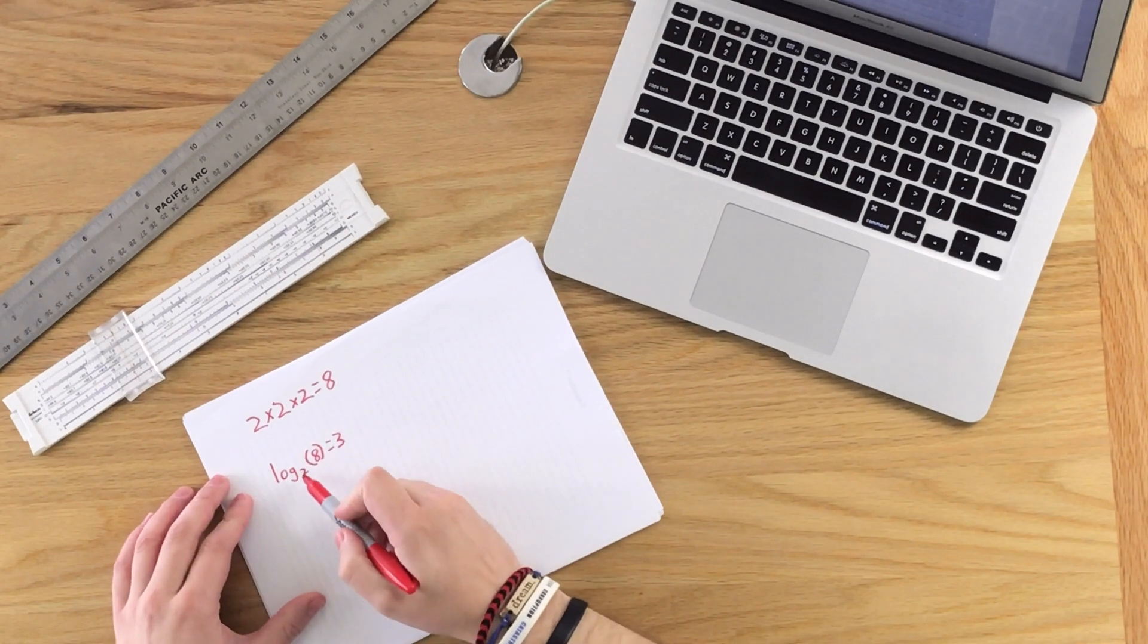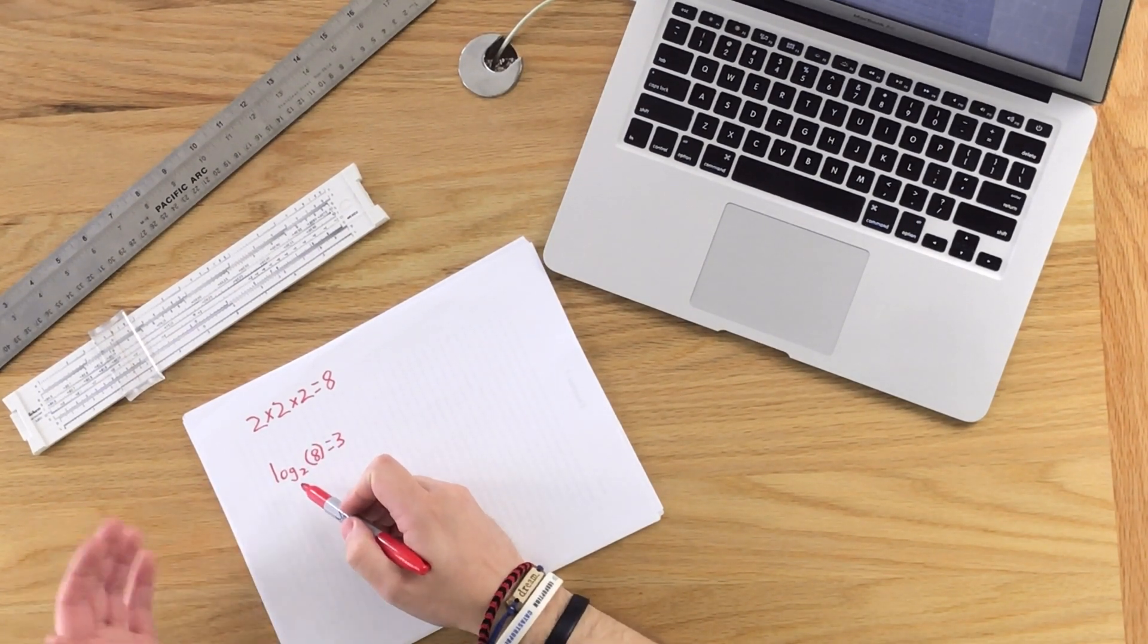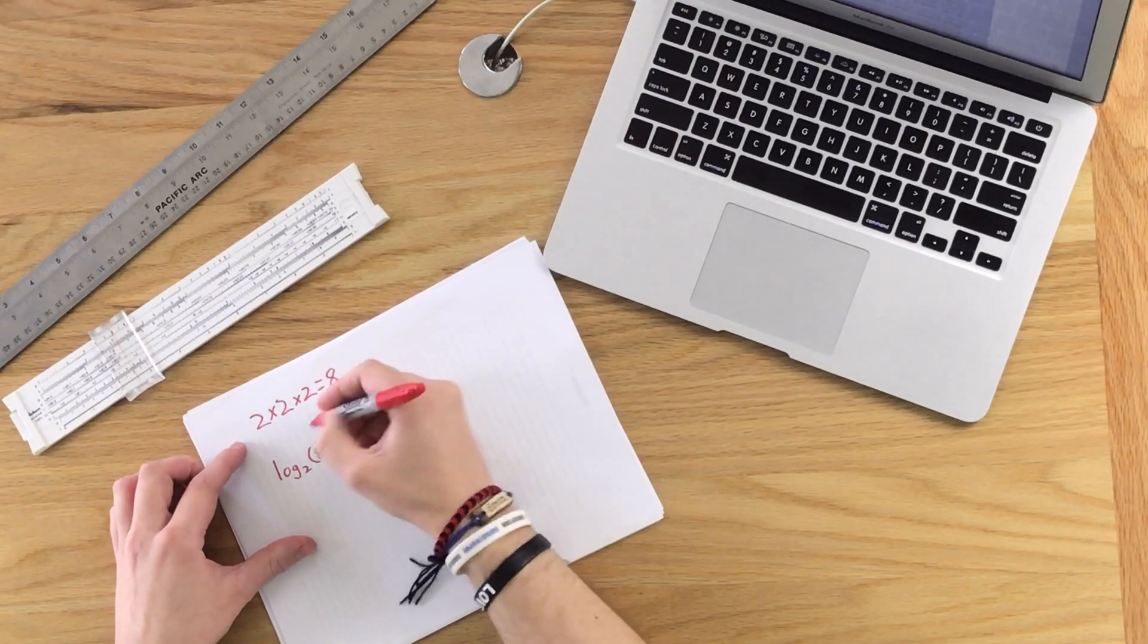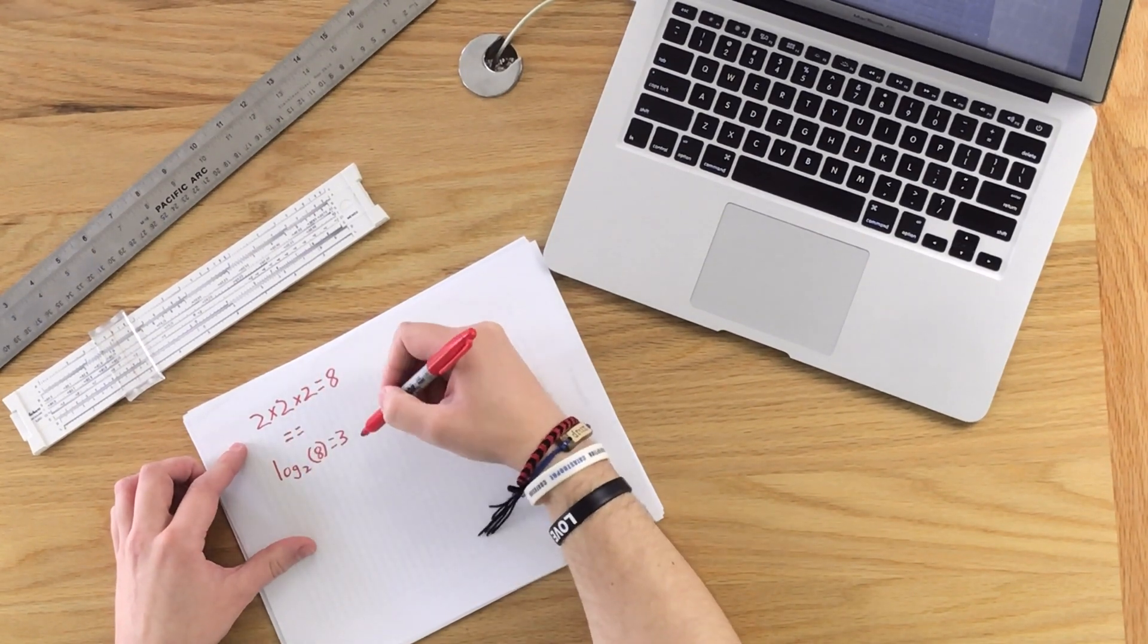The subscript 2 is called the base. It is the number that we're multiplying together to get 8. Therefore, these two equations are really equal. They say the same thing, it's just different ways of writing them. I know the logarithm might look more complicated, but the bigger the numbers get and the more complex the numbers get, the logarithm is going to be so much easier to understand, especially when you have a slide rule or today a calculator.